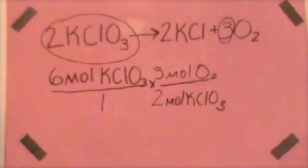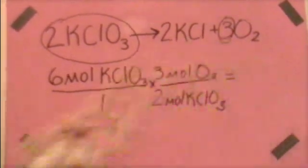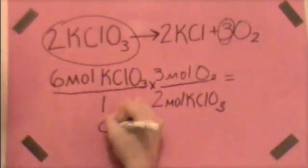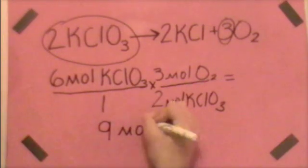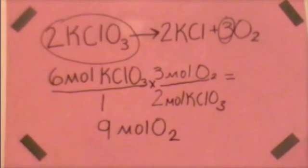In doing this equation, we get 9 moles of O2. Simple enough, right? Now here's where it gets a little more complicated when stoichiometry involves mass.